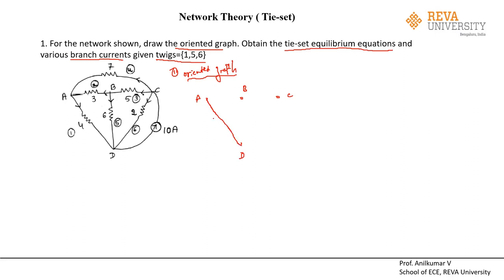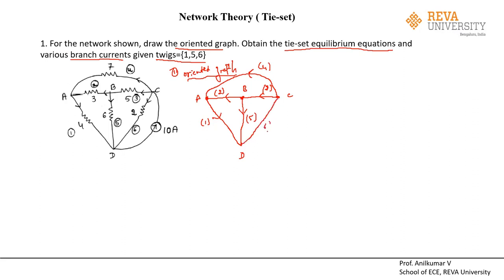Between nodes a and d there is branch one, oriented towards d. Branch two is connected between a and b, oriented towards a. Branch three is connected between b and c, oriented towards b. Branch four is connected from a to c, oriented towards a. Branch five is between node b and node d, oriented towards d. Branch six is connected to nodes d and c, oriented towards d. Since there is a current source, we treat it as an open circuit, so we don't consider it in the oriented graph.